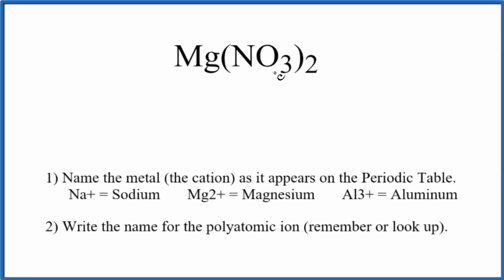To write the name for Mg(NO3)2, we first need to realize we have this NO3 here. This is the nitrate ion. In fact, we have two of them. So NO3 is the nitrate ion. It's a polyatomic ion.